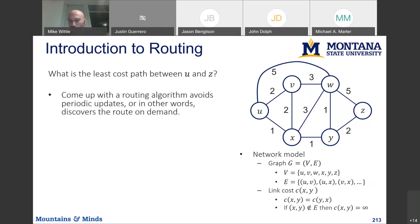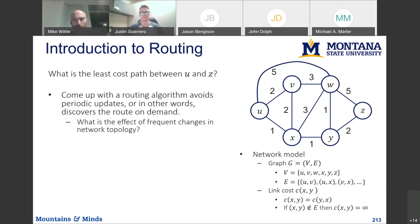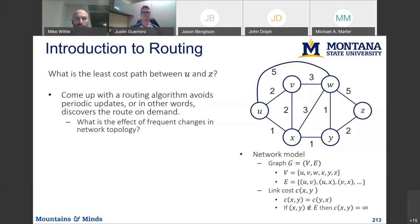I want to give you guys two other approaches that can be used in routing, and we'll see how they end up being used at the level of the internet. The first approach is how to discover a route on demand. In link state routing, everybody needs to collect the whole topology information and compute the shortest path. In distance vector, we're disseminating a distance to the destination — not the whole route — but that still has to be computed while the network exists.